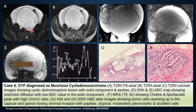The fourth case was a 27-year-old female diagnosed as mucinous cystadenocarcinoma. The T2-weighted fat-suppressed axial, T2-weighted non-fat-suppressed axial, and T2-weighted coronal images showed a complex cystic abdominopelvic lesion with solid components and ascites. Diffusion-weighted imaging and ADC maps showed restricted diffusion with low ADC values in the solid portion. Multi-voxel spectroscopy at TE 30 showed a choline peak, lipid-lactate peak, and high choline-creatine ratio, with no NAA peak. The 40x H&E slide showed multiple tumor cells reaching up to the capsule, and the 200x image showed glands with mucin, stromal invasion with papillae, and atypical moderately pleomorphic stratified cells.